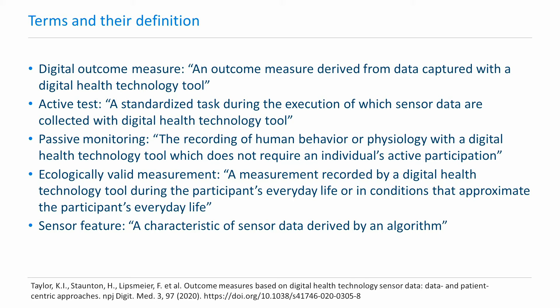We are going to discuss another framework created by Taylor et al. to advance the utilization of digital health technologies. Here are some definitions that will be relevant. Digital outcome measures are the measures derived from data captured with digital health technology. Active tests are the scripted or standardized tasks performed by an individual where data is collected using digital health technologies. Passive monitoring is where the recording is carried out for human behavior and physiology using digital health technology without requiring active participation from individuals. Ecologically valid measurements are measurements carried out in participants' everyday life or conditions very similar to participants' everyday life. Features are the characteristics derived by using algorithms when applied to the sensor data.